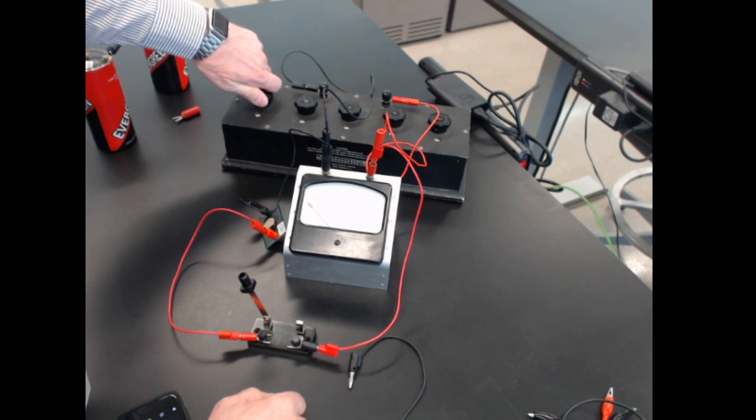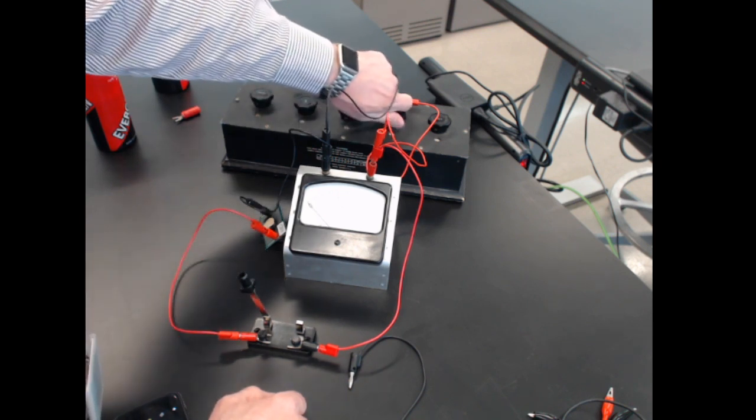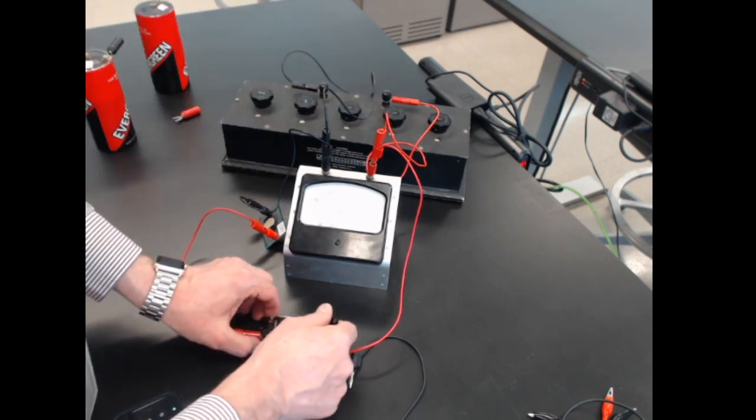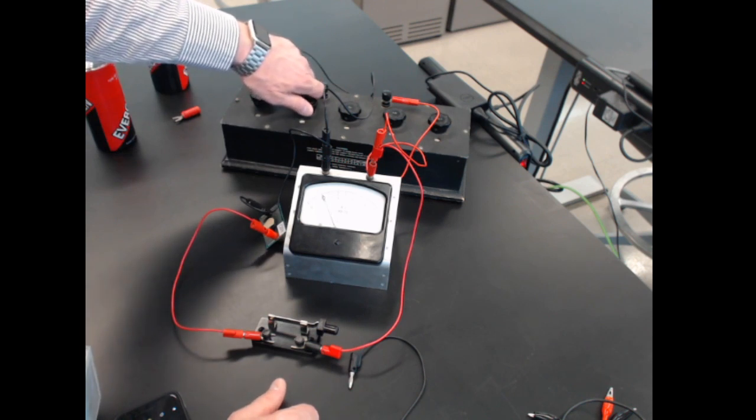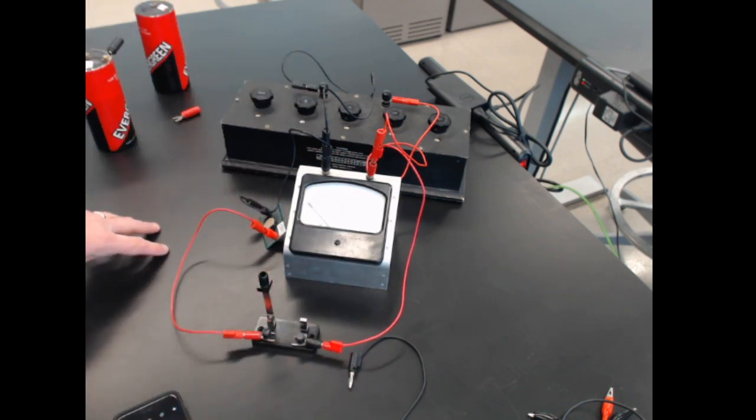I'm at 1,100. I'm going to go down to 700 ohms. I'll take a few more. 700 ohms gives me 1 volt. I think I'm going to stop there. We got enough data.